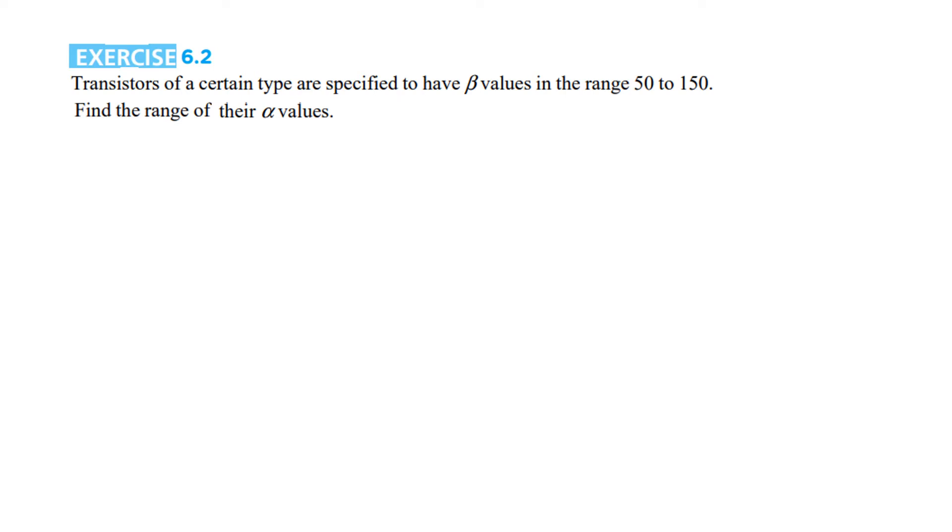The next example: Transistors of a certain type are specified to have beta values in the range of 50 to 150. Find the range of alpha. We plug into the formula: alpha = beta/(beta + 1). For beta = 50, alpha = 0.980. For beta = 150, alpha = 0.993. This is the answer given.